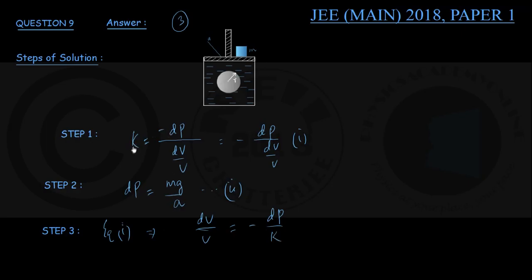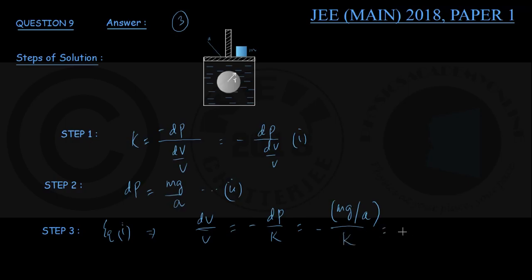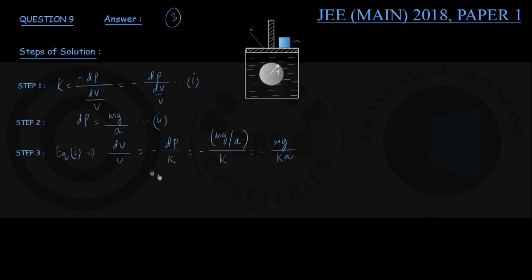From bulk modulus K equals minus ΔP upon (ΔV/V), bringing ΔV/V to the left side gives fractional change in volume equals minus ΔP upon K. From equation two, with this mass placed on the piston, the change in pressure is mg upon A. Substituting this value gives minus mg upon A divided by capital K, which comes out to minus mg upon KA. So we have the fractional change in volume equals minus mg upon KA.